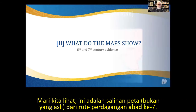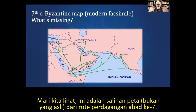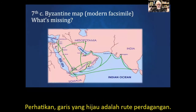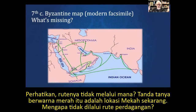This is a facsimile — not a real map, just a facsimile of the trade routes from the seventh century. Notice all those green lines — those are the trade routes. Notice where they don't go: where the red question mark is. That's where Mecca is today. Why is it not on the trade route?